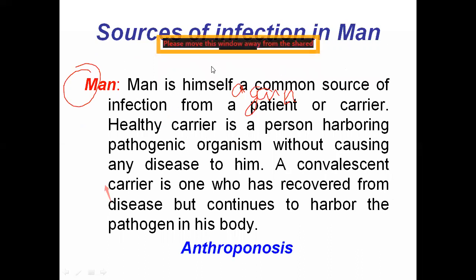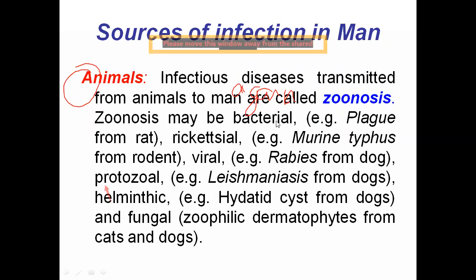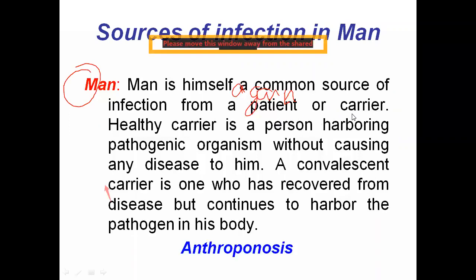Man himself is a common source of infection — from a patient or a carrier. A patient is someone suffering from a disease and showing symptoms. A carrier is a person harboring the pathogen in their body but showing no symptoms. Carriers are actually more dangerous than patients because they appear healthy, yet they can transmit pathogens to others.